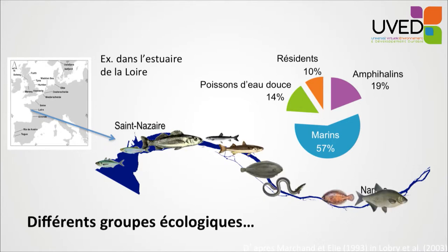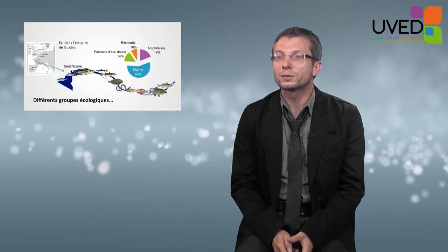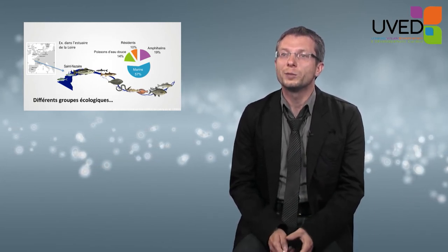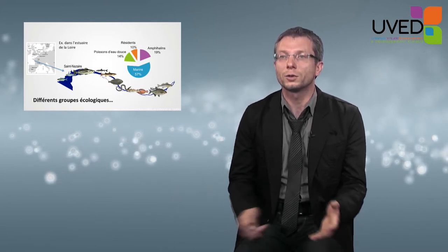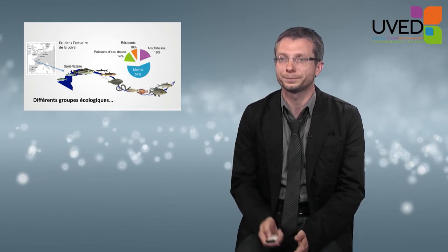If we go back to the Loire estuary example and look at the fishes, we see a number of ecological groups all along the estuary: marine fishes downstream, which represent the highest number of fishes found in the estuary — essentially juveniles of marine species which come and find refuge in the estuary because of the water turbidity, where they grow, develop, and feed. Upstream, we have freshwater fishes, which can be found downstream during floods. There are also resident fishes that spend their entire ecological cycle in the estuary, and migratory fishes that pass through the estuary twice, depending on the life cycle between the reproduction area and the place where they feed and grow.